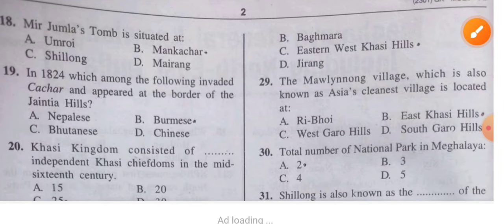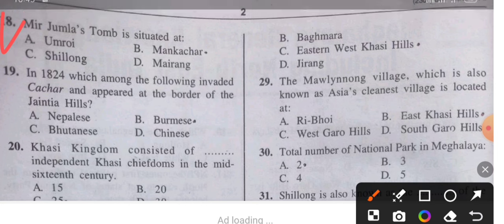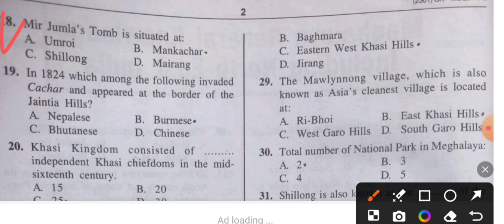Question 18: Mir Jumla Tomb is situated where? The answer is Man Kachar. Question 19: In 1824, which of the following invaded Cachar and the areas at the border of the Jaintia Hills? The answer is the Burmese.